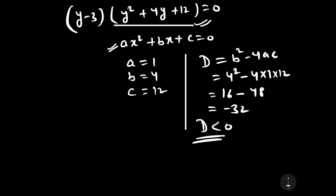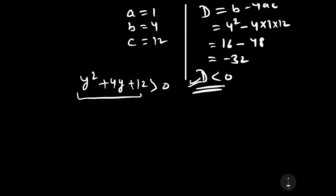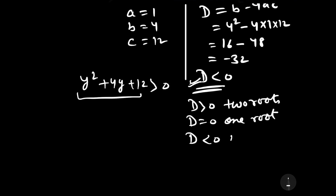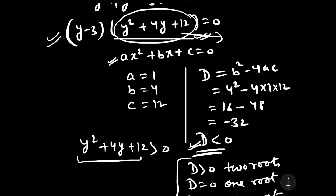The value of D is less than 0, which tells us that y squared plus 4y plus 12 is always greater than 0 and has no real roots. Since D is greater than 0 it has two roots, if D equals 0 it has one root, and if D is less than 0 it has no real roots. Therefore the equation has only one real root, which is y equal to 3.